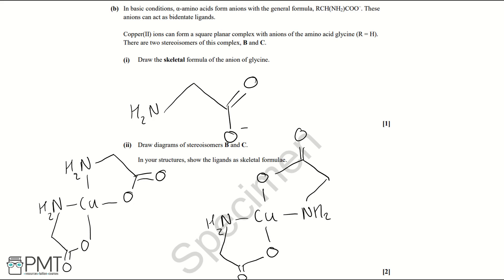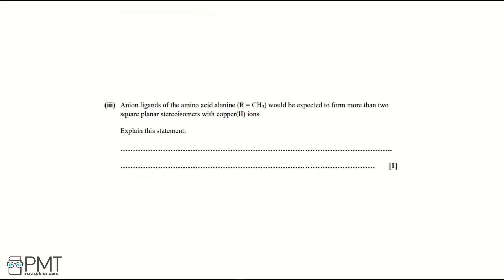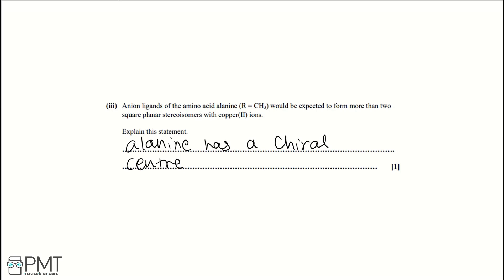Part three: anion ligands of alanine (where R = CH₃) would be expected to form more than two square planar stereoisomers with copper(II) ions. The reason is that alanine has a chiral center. A chiral center means you can have mirror image stereoisomers — reflections of the square planar stereoisomers — which are additional stereoisomers, giving more than two in total.